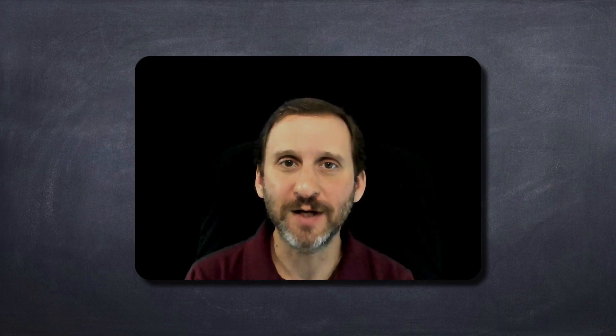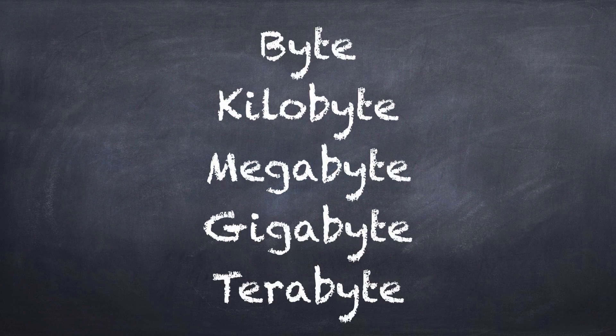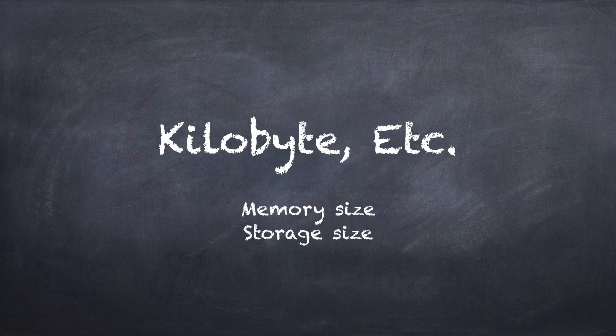Let's take a look at some terms that you're familiar with and have seen all the time: byte, kilobyte, megabyte, gigabyte, and terabyte. These are terms used to describe the memory size and storage size of your devices. You could say your Mac has a hard drive with a certain number of gigabytes, or that the memory on your Mac also has a certain number of gigabytes. Anytime there's a size of digital things — memory or storage — we use these terms.